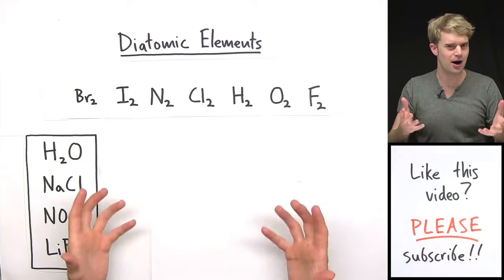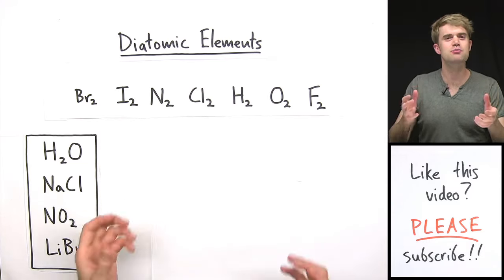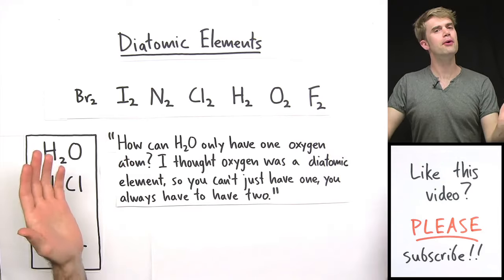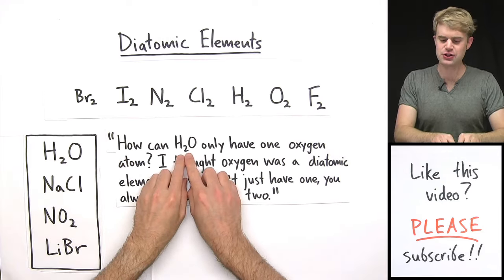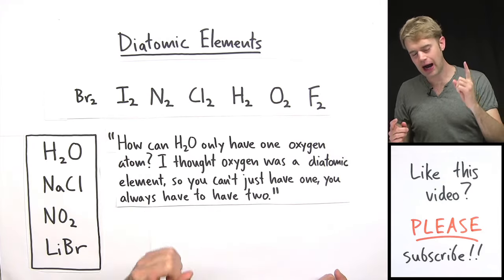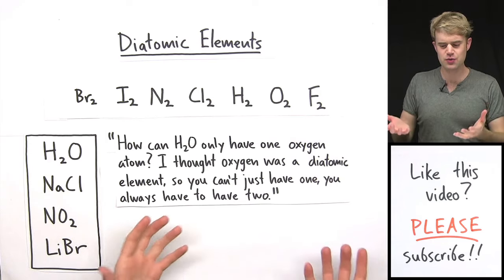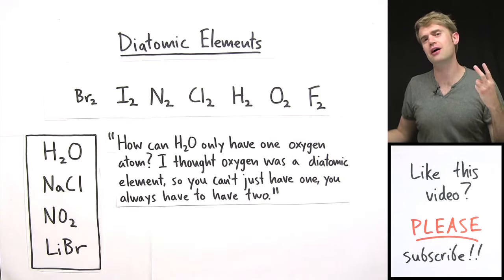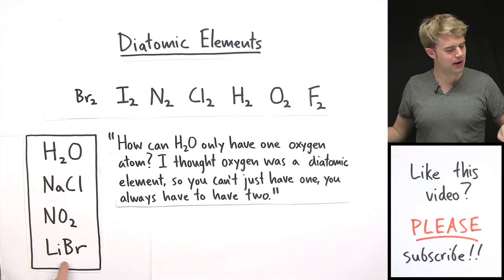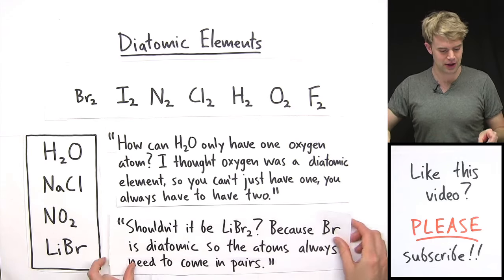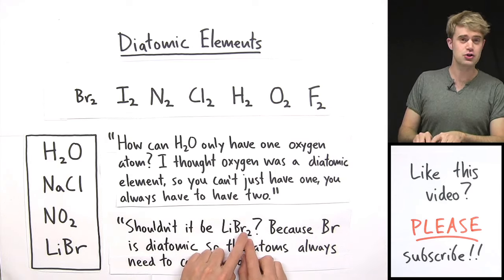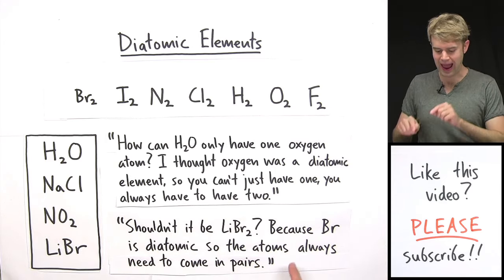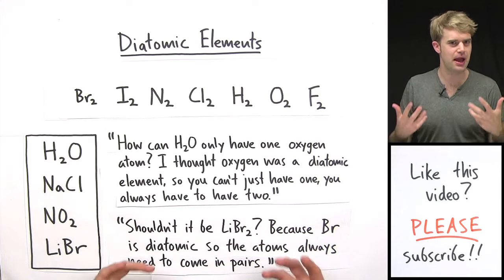Let me show you some comments I've gotten on my videos that express this confusion. One person asks, how can H2O only have one oxygen atom? I thought oxygen was a diatomic element so you can't just have one, you always have to have two. Now talking about LiBr here, someone else asks, wait, shouldn't it be LiBr2? Because bromine is diatomic so the atoms always need to come in pairs.